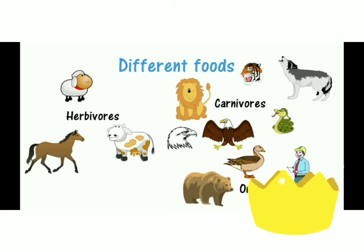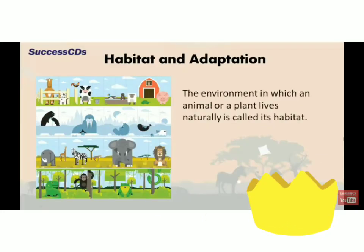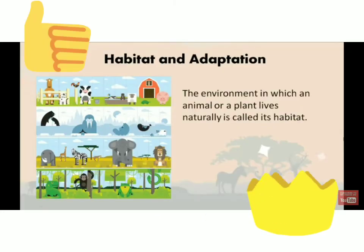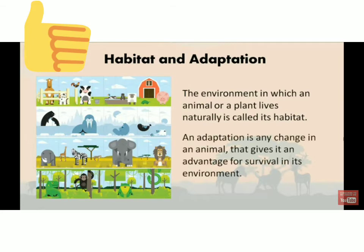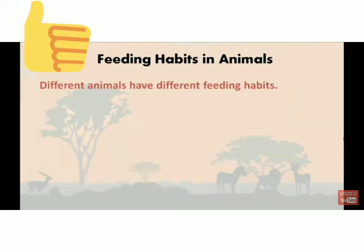Humans and ducks are in the category of omnivorous animals because they eat both. So we have studied that the environment in which an animal or a plant lives naturally is called its habitat — the place where an animal lives, grows and reproduces. The second thing is adaptation. Adaptation is any change in an animal that gives it an advantage for survival in its environment.